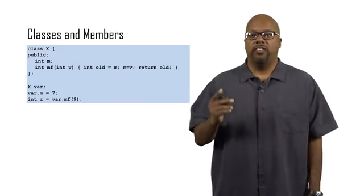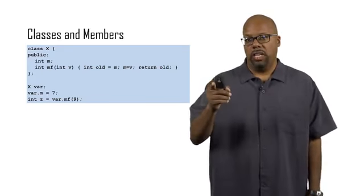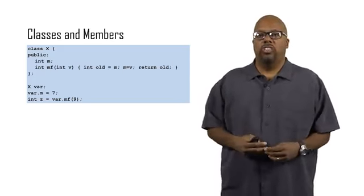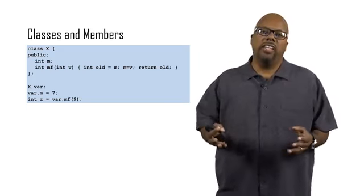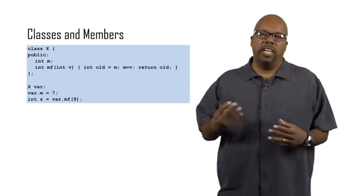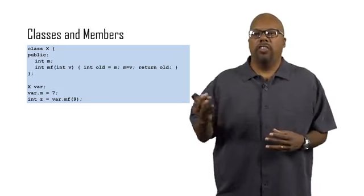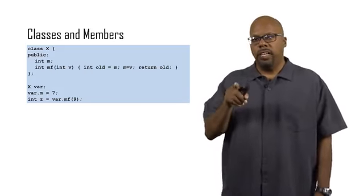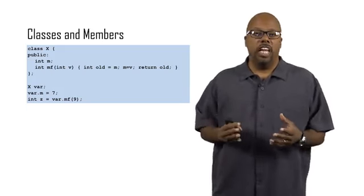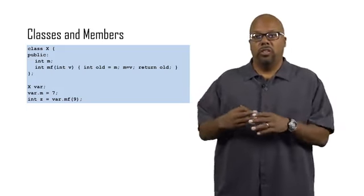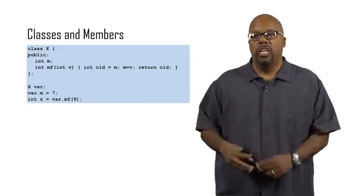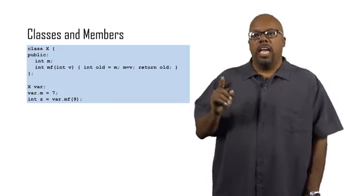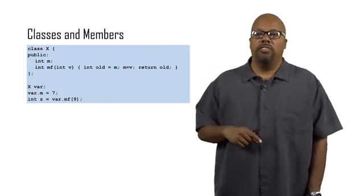But inside there, inside class X, I define two things: int m and then int mf. Now m is just a variable, an integer. So now, what that's saying is that inside this class X, every time I make a new object of that class, it's going to have a variable called m, all to itself. Now then the next line says int mf. But notice that the mf has parentheses after it, with int v inside parentheses. Since it has those parentheses, the compiler knows that is a function. So m is a variable, but mf is a function that I'm defining.